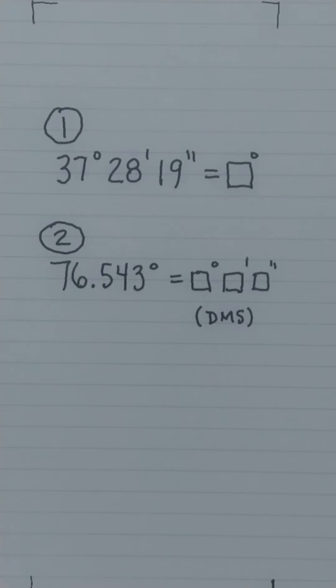So let's look at number one here. 37 degrees, 28 minutes, and 19 seconds. And I want to turn that into decimal degrees.